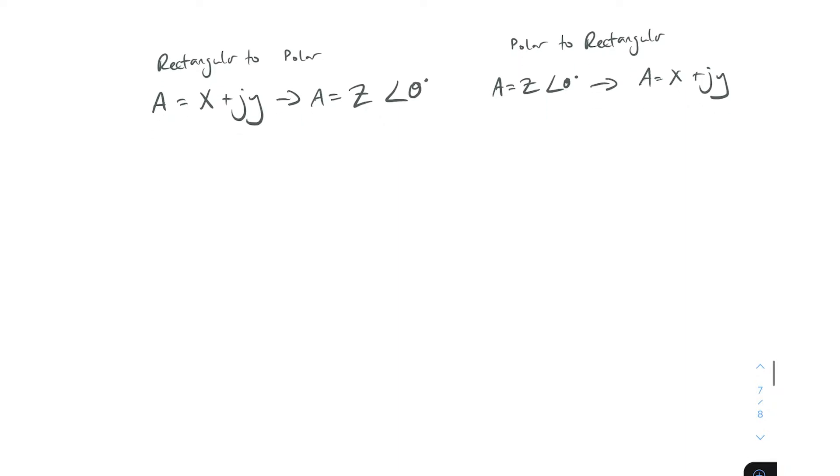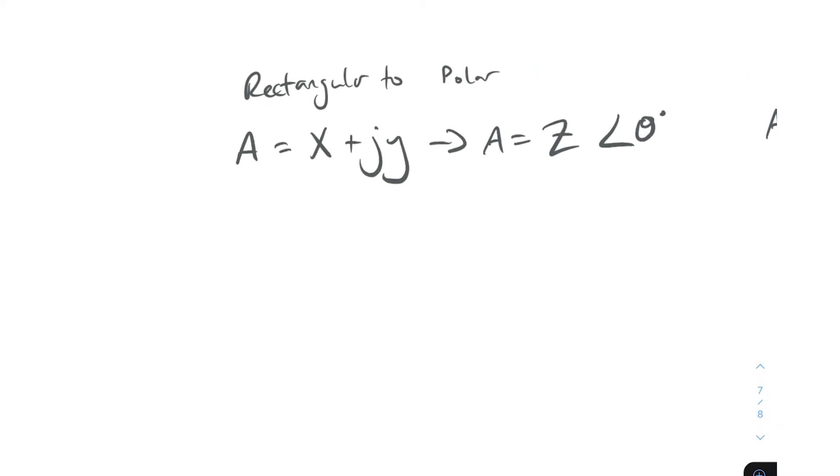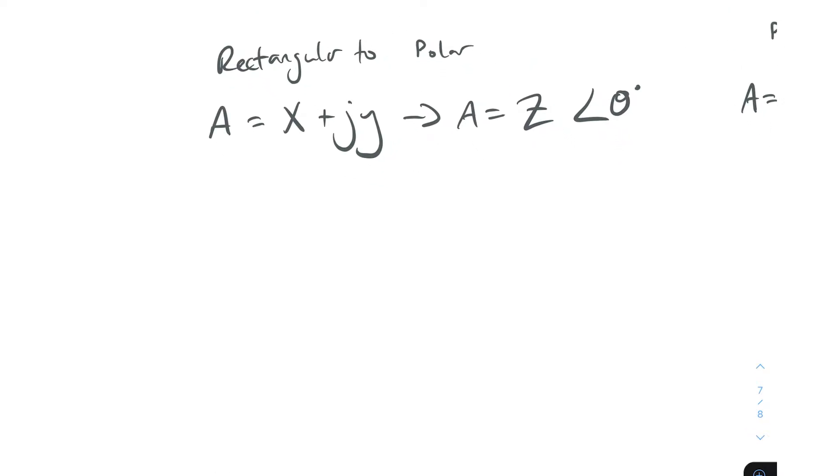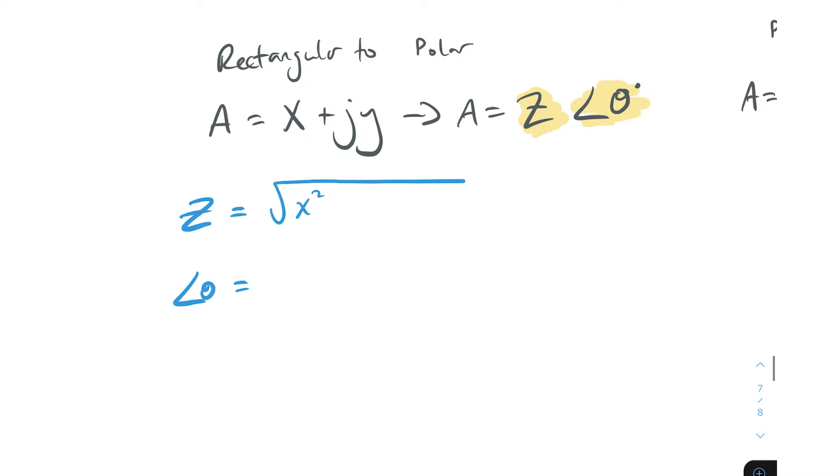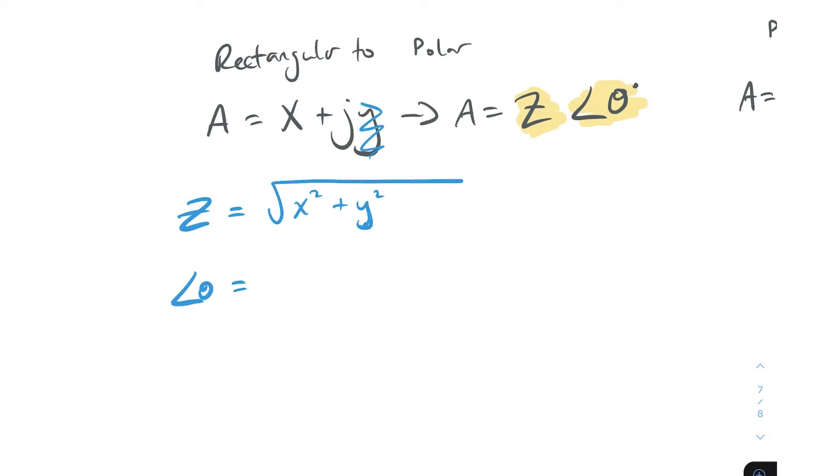Let's start off first with rectangular to polar format. If we've got A equals x plus jy, what we want to get is Z and we want to get the angle. We say that Z is equal to... and the angle theta is equal to... The formula for working out these two is we take the square root of x squared plus y squared.